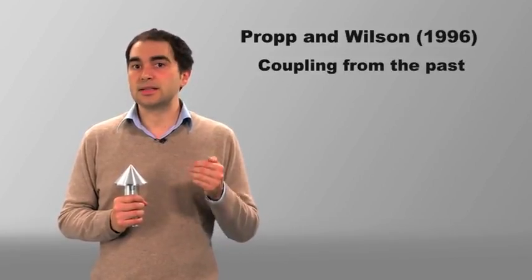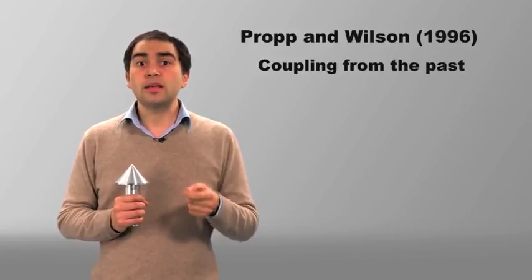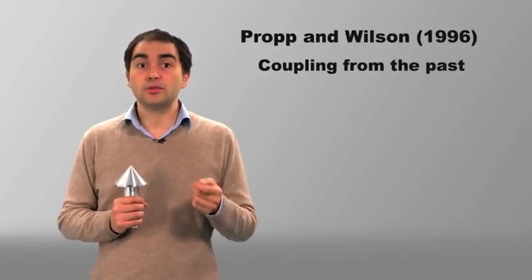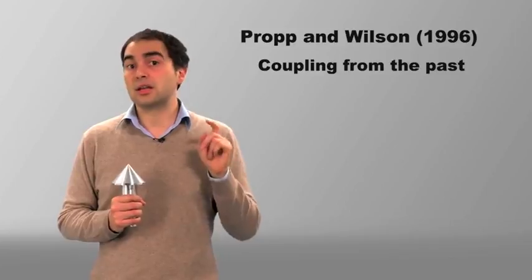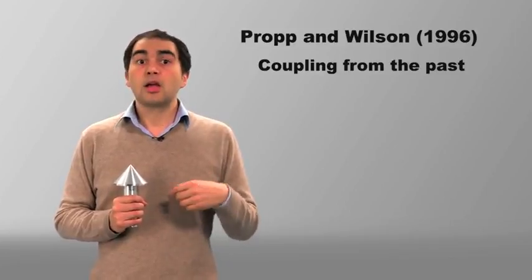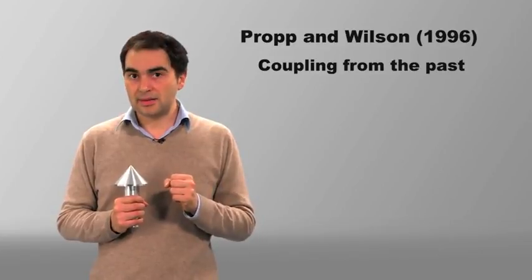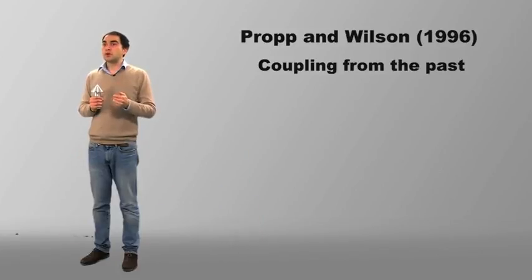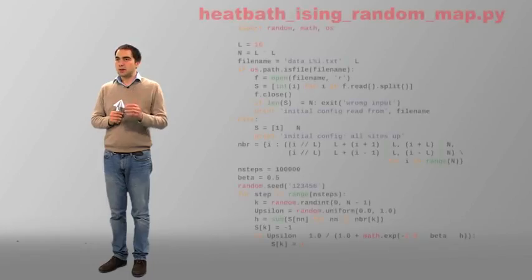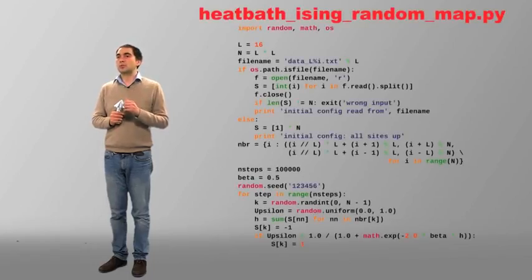Using a seminal idea by Propp and Wilson in 1996, you will be even able to generate using this Markov chain heat bath algorithm, Boltzmann configurations which are perfectly independent, like the pebbles thrown by the children on the Monte Carlo beach. Before going on, please download, run and modify the program heatbath_ising_randommap.py that we discussed in this section.